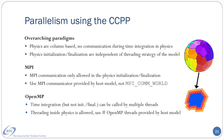The CCPP was implemented with a couple of overarching paradigms related to parallelism. First, physics are assumed to be column-based only, and no communication between columns related to physics is expected during time integration. Second, physics initialization and finalization are independent of the larger threading strategy of the host application. For MPI, this means that MPI communication is only allowed during physics initialization and finalization, and should it be used for these phases, it should use an MPI communicator provided by the host application and not MPI_COMM_WORLD. For OpenMP, the time integration of physics — the run phase of each scheme — can be called by multiple threads, but threading should use the number of OpenMP threads provided by the host application.